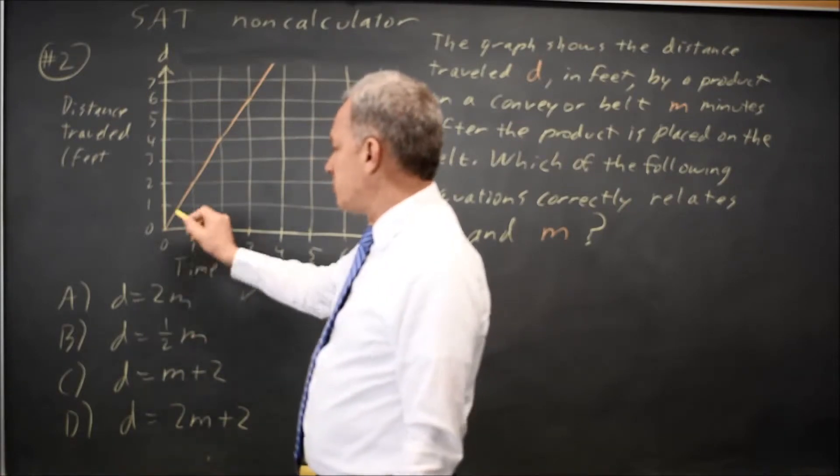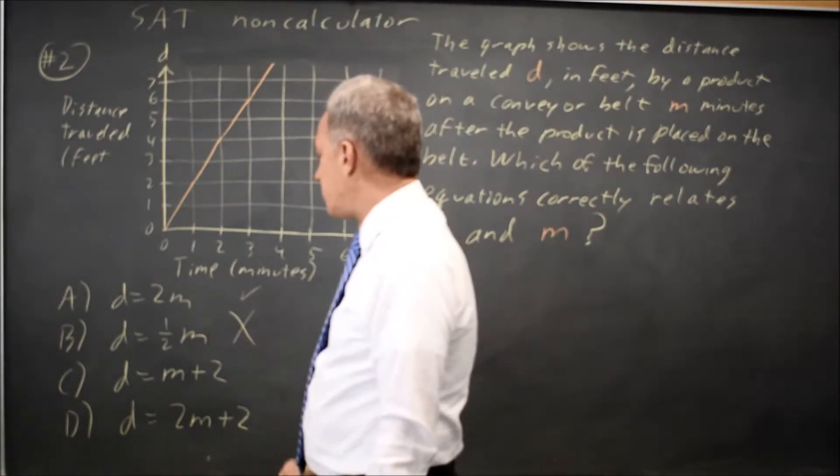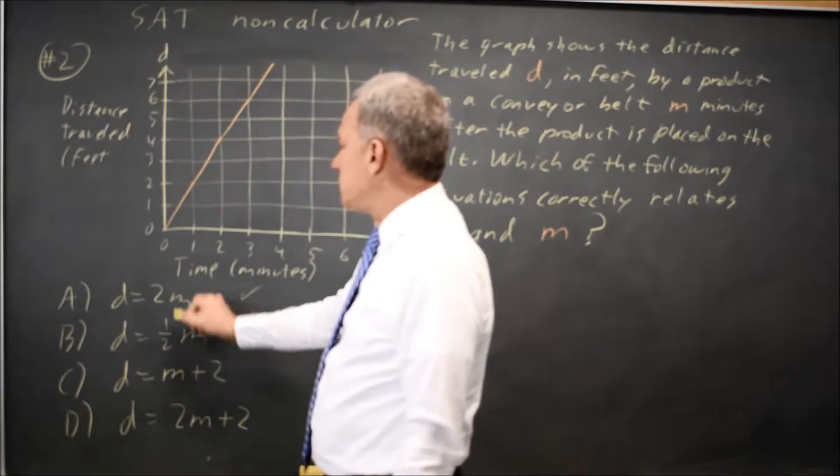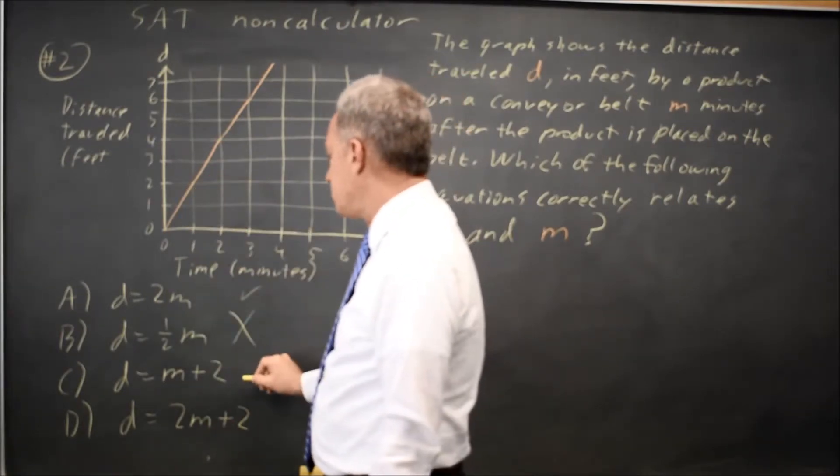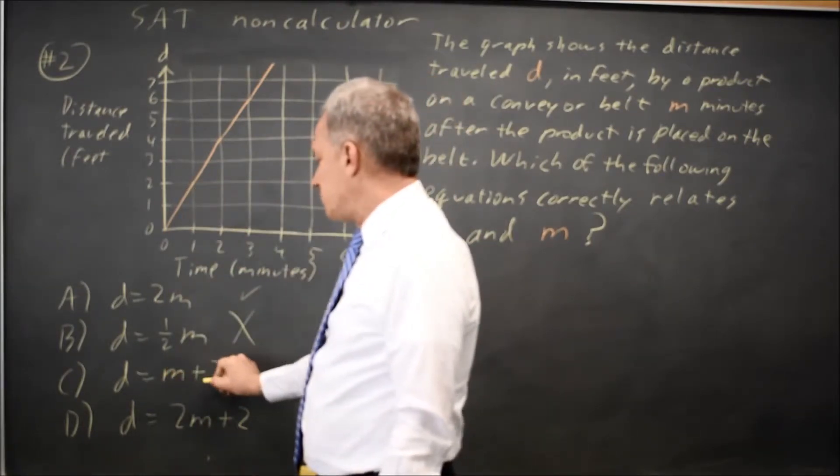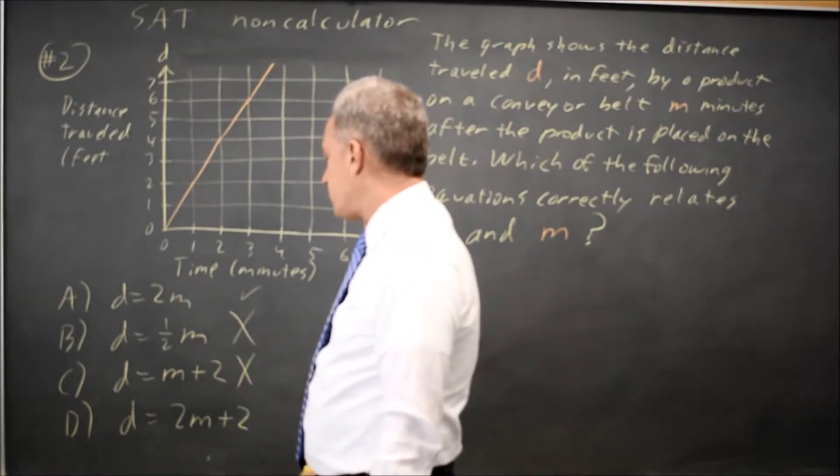If M is 1, I get 1 half for D instead of 2, so choice B is the wrong answer. If M equals 1, D should be 3, but in the graph D is 2. In choice C, I would get 3, so choice C is the wrong answer.